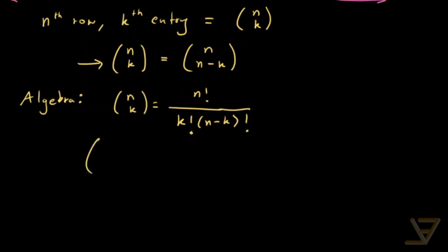And we have n choose n minus k, n minus k factorial. And that's just equal to n factorial divided by n minus k factorial.